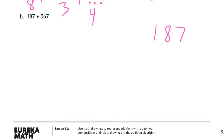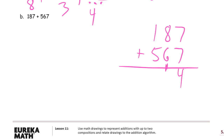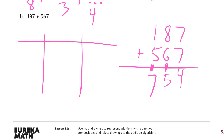One hundred eighty-seven plus five hundred sixty-seven. Ones digits first: 7 plus 7 is 14 — composing a ten with four ones left behind. Adding our tens digits: 8 plus 6 is 14, and one more is 15 — that's a hundred with five tens left behind. 1 plus 5 is 6, and one more makes seven hundreds. Seven hundred fifty-four.